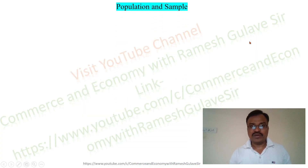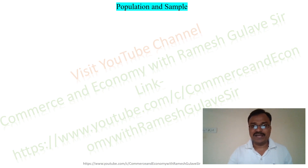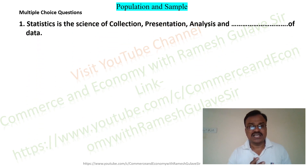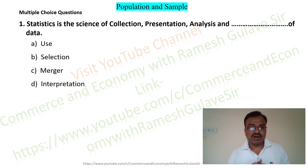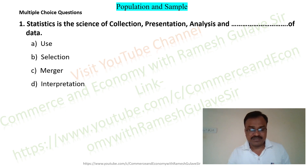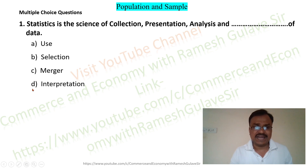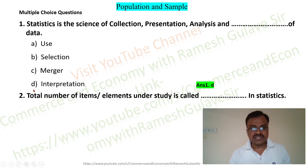Welcome friends. We are going to discuss important multiple choice questions on population and sampling in statistics. The first question says: statistics is the science of collection, presentation, analysis, and dash of data. The options are: use, selection, merger, and interpretation. Statistics is the science of collection, presentation, analysis, and interpretation of data, so option B is the right answer.